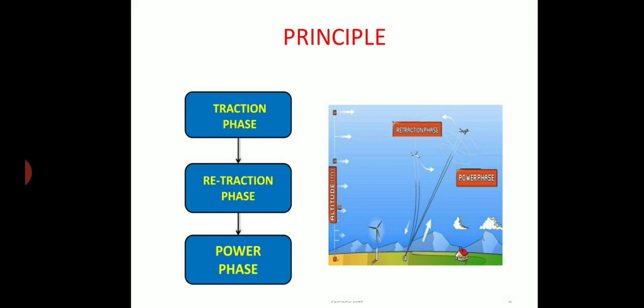The rotating drum gains rotating motion and is indirectly connected to the power generating unit. Due to this motion of the kite in the sky, motion is generated in the rotating drum and electricity is generated in the rotating engine.